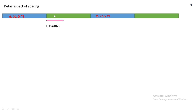How does U1-snRNP join with that intron? There is one peculiarity: the sequence of this RNA is complementary with the sequence of the intron's 5' end. By that complementarity, it combines with and joins the 5' end of that intron.